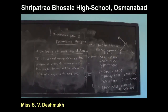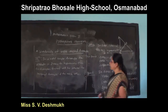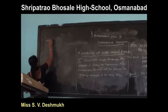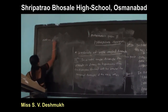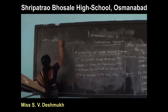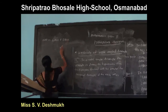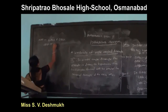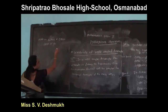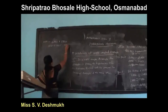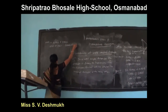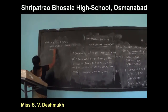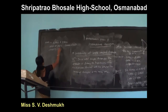Now in triangle ABC and triangle BDC, angle ABC is concurrent with angle BDC, each equal to 90 degrees. And angle BCA is concurrent with angle BCD, which is a common angle. Therefore triangle ABC is similar to triangle BDC by AA test of similarity. This is equation two.